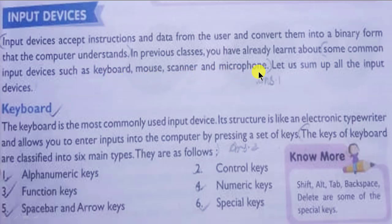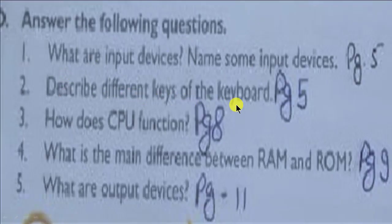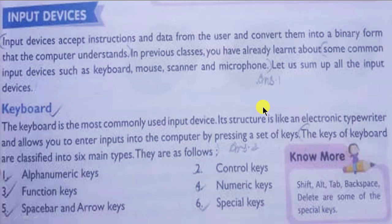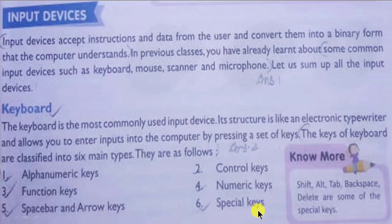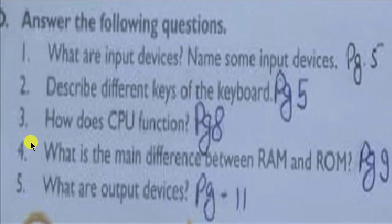Question 2: describe different keys of the keyboard. You have to write the names of the keys. The keys of the keyboard are classified into six main types, as follows: alphanumeric keys, control keys, function keys, numeric keys, space bar and arrow keys, and special keys. That is your answer number two complete.